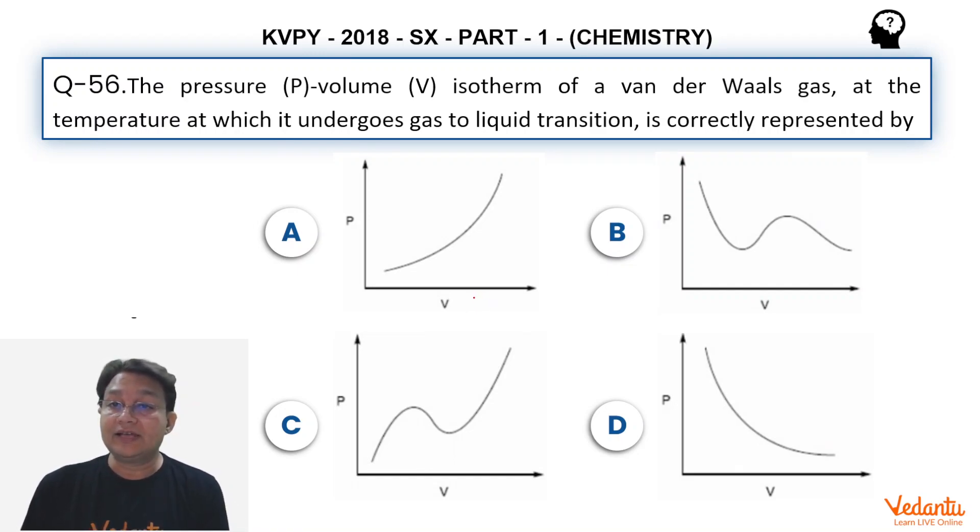The pressure volume isotherm of a Van der Waals gas at the temperature at which it undergoes gas to liquid transition is correctly represented by A, B, C and D. Four options are there.